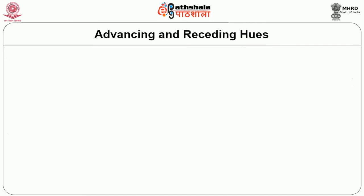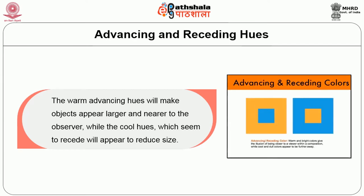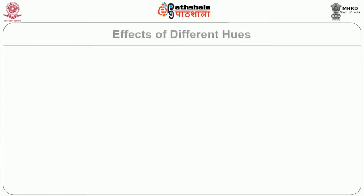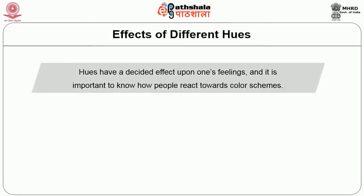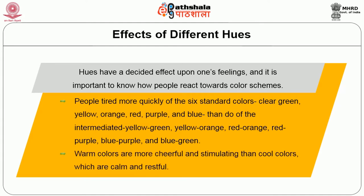The warm advancing hues will make objects appear larger and nearer to the observer, while the cool hues which seem to recede will appear to reduce size. Hues have a desired effect upon one's feelings and it is important to know how people react towards color schemes. People tire more quickly of the six standard colors — clear green, yellow, orange, red, purple and blue — than of the intermediate hues such as yellow-green, yellow-orange, red-orange, red-purple, blue-purple and blue-green. Warm colors are more cheerful and stimulating than cool colors, which are calm and restful.